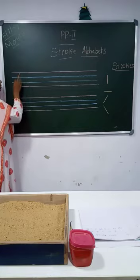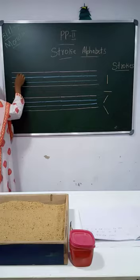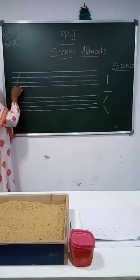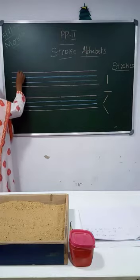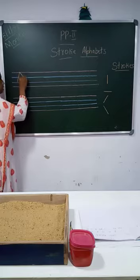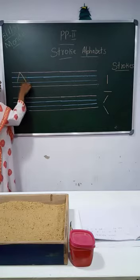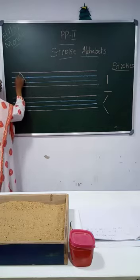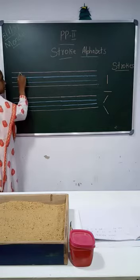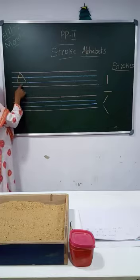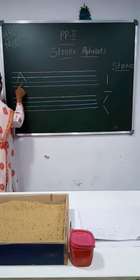First, left slanting line — we start from the red line and stop on the blue line. Then again from the red line to the blue line, right slanting line. Then a sleeping line in the middle — letter A.